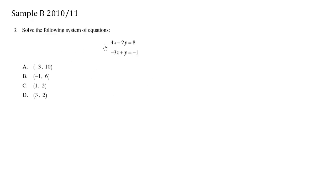Let's solve the following system of equations. We have 4x plus 2y equals 8. We have negative 3x plus y equals negative 1. We've done a few of these before. To solve it, we can simply try to eliminate one of the variables.